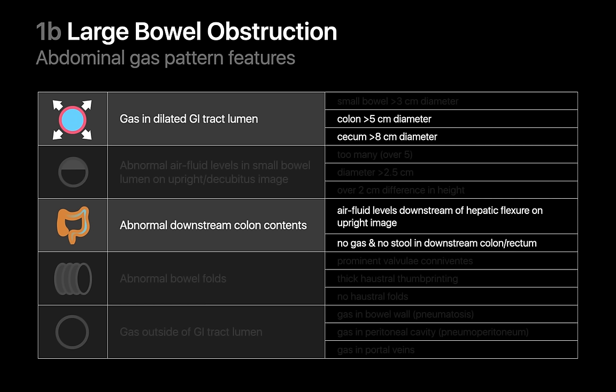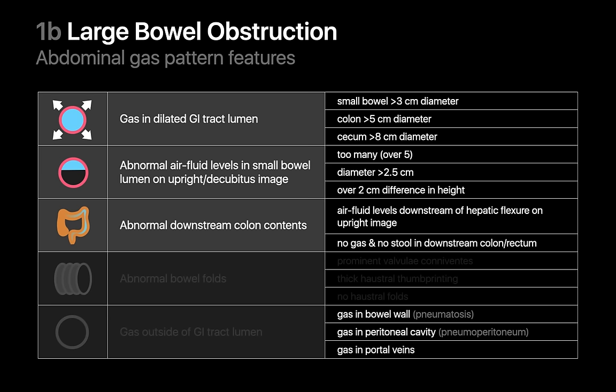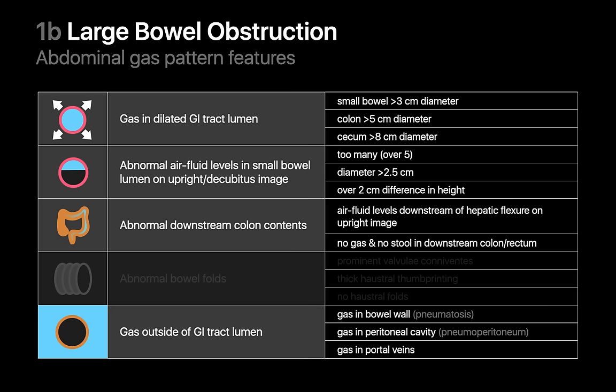If the ileocecal valve is competent in the setting of a large bowel obstruction, the small bowel gas pattern may appear normal. However, if the ileocecal valve is incompetent, you may also see abnormally dilated small bowel and abnormal air-fluid levels there too. If colonic wall necrosis or perforation eventually occur, complications such as colonic wall pneumatosis, portal venous gas, or pneumoperitoneum may be present. Be aware that bowel wall pneumatosis can be tough to differentiate from pseudopneumatosis caused by air trapping in stool, and CT imaging can be helpful in resolving this.